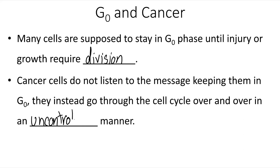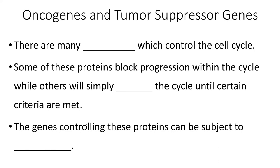There are many proteins which control the cell cycle. Some of these proteins block progression within the cell cycle, whereas others simply hold the cycle until the criteria are met. The genes controlling these proteins can be subject to mutations.